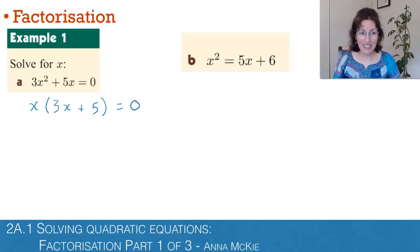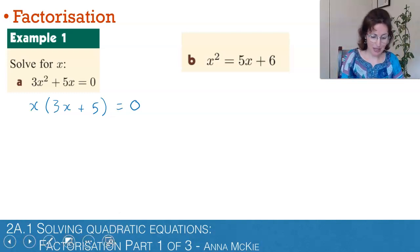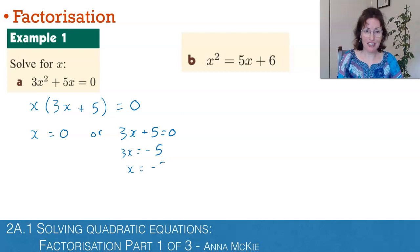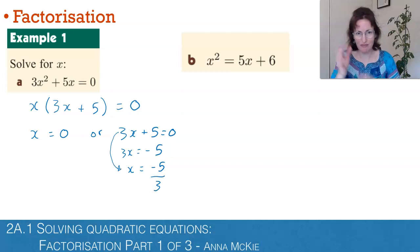Here's where the null factor law kicks in. There's two things multiplied together now, and therefore one or both has to be zero. Therefore, x is equal to zero or 3x plus 5 is equal to zero. Let's keep solving for x. The first one is solved, then doing some rearranging here. At this level of maths, you don't necessarily have to show every step of the way. You could have gone from this first line down to this last line. Solving for x: x is zero or negative 5 on 3.